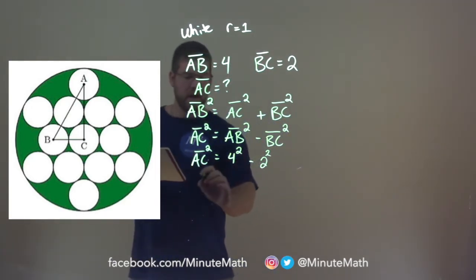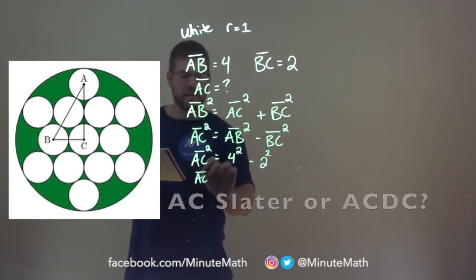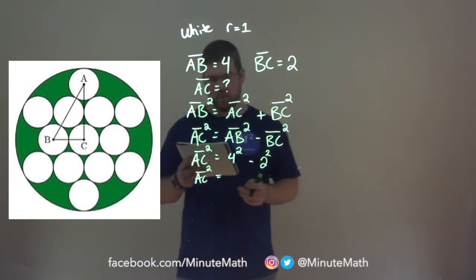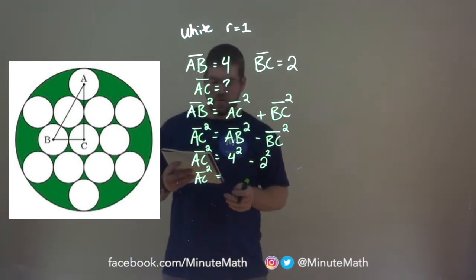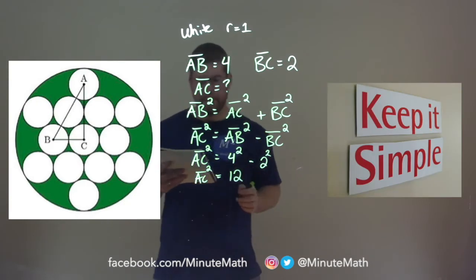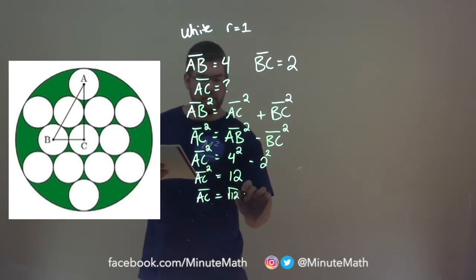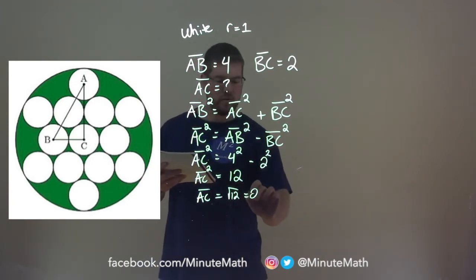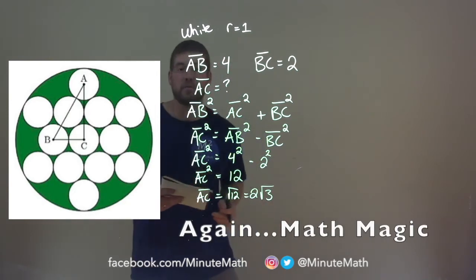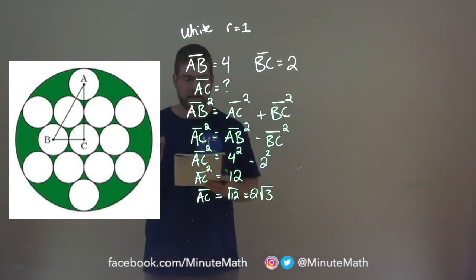This simplifies to be AC squared is equal to, well 4 squared is 16, 2 squared is 4, and we get 12 here. Square root both sides, and the length of AC is just equal to the square root of 12, which simplifies to be 2 square root of 3. So now we have the length of AC.